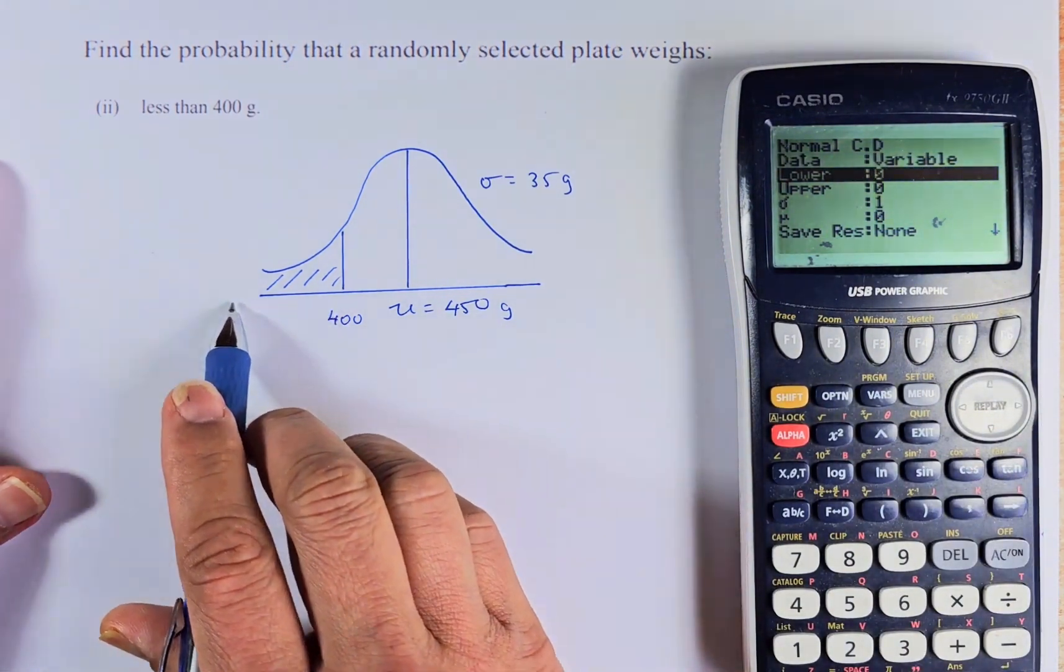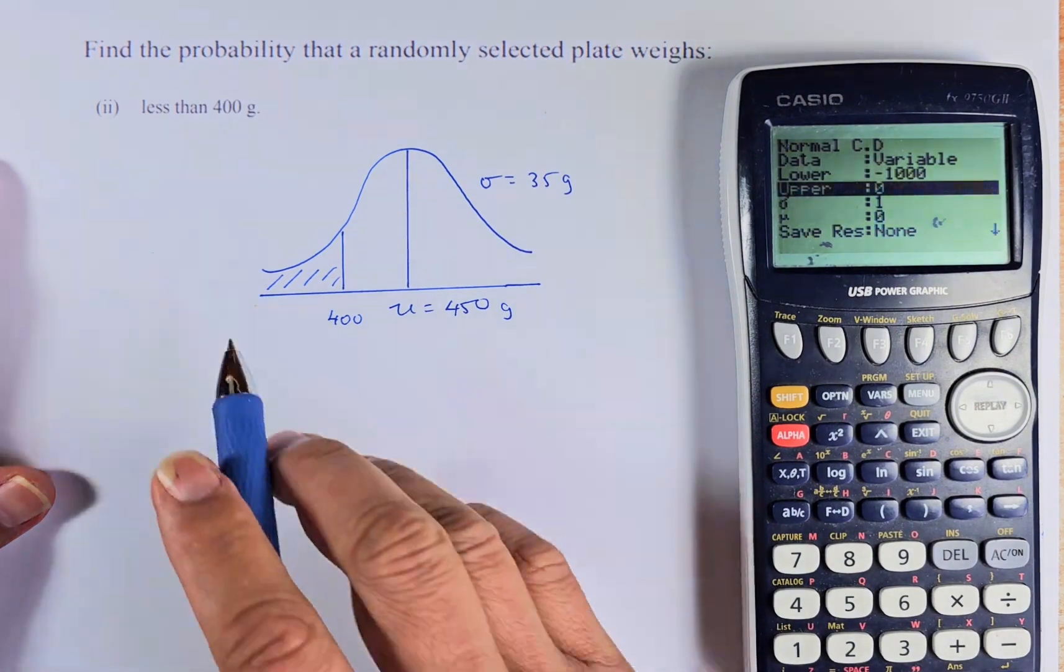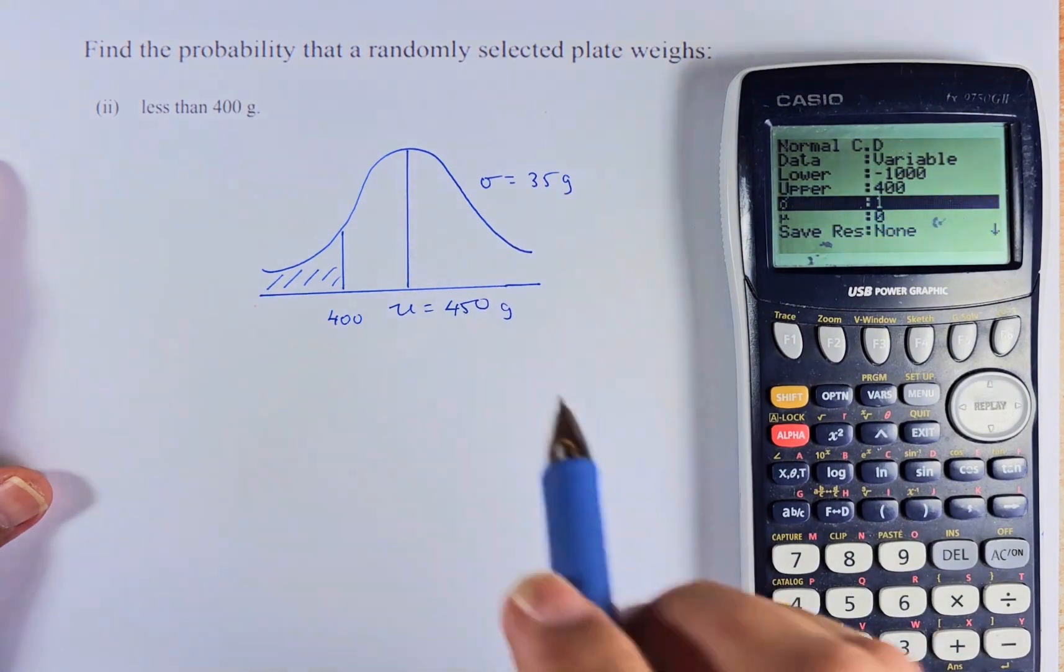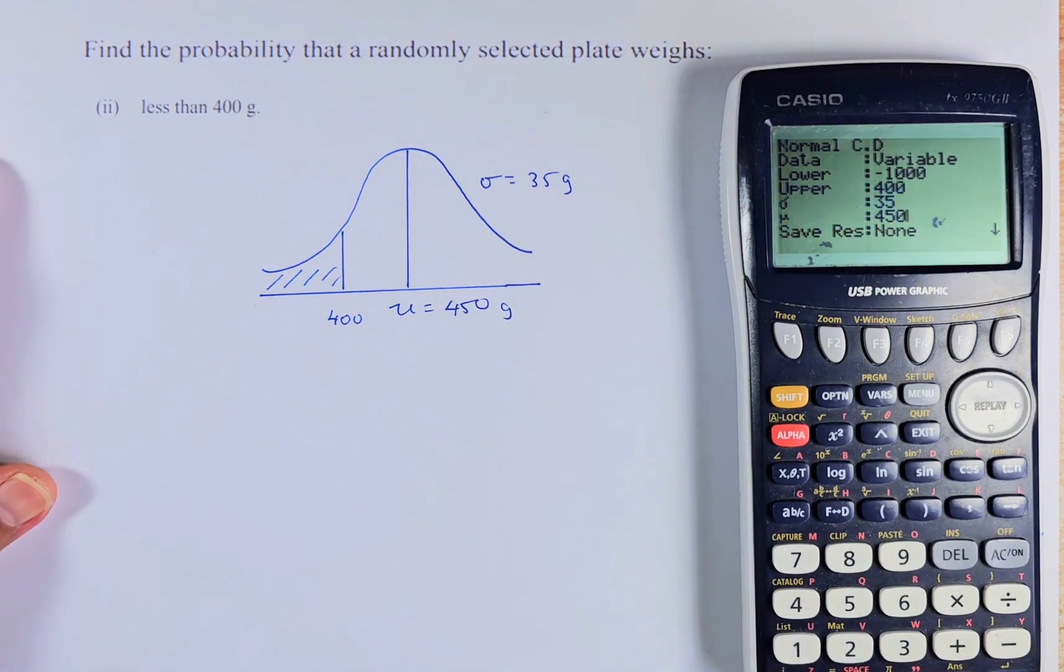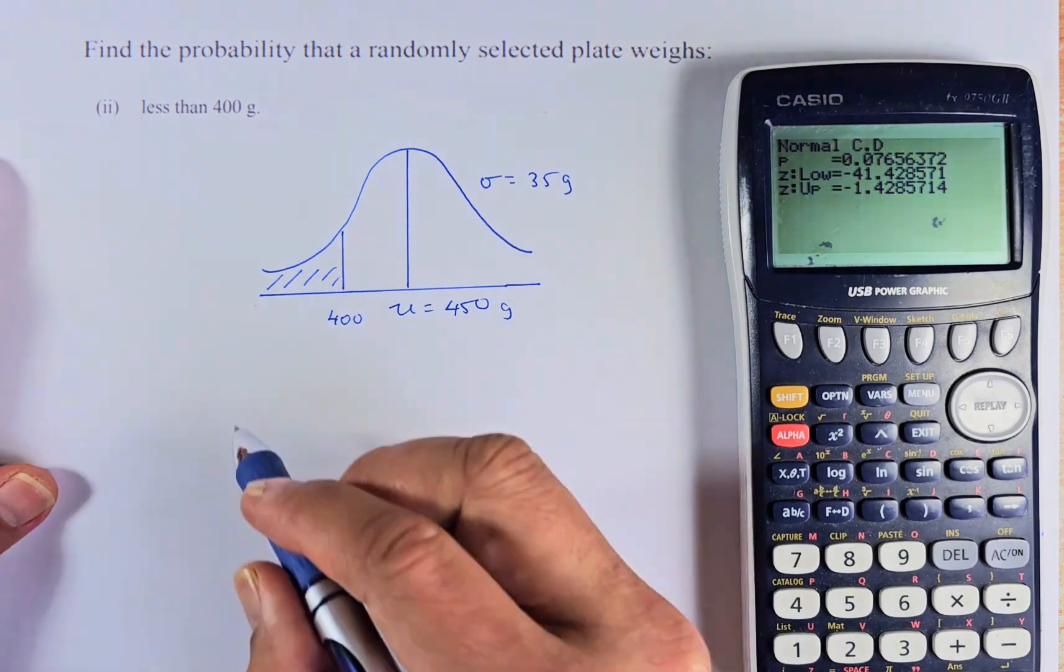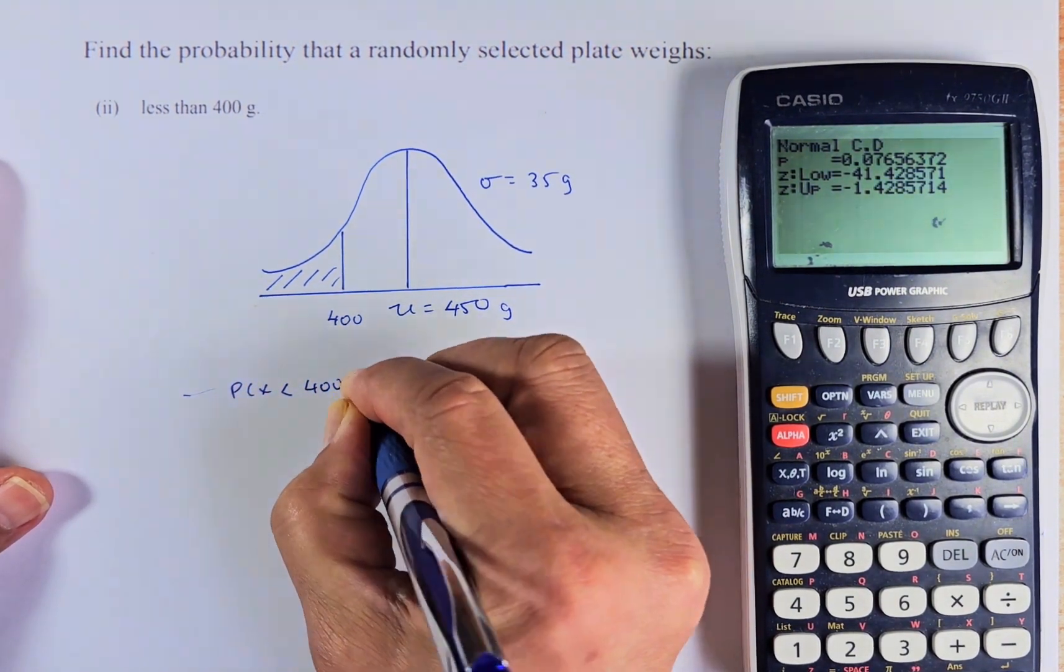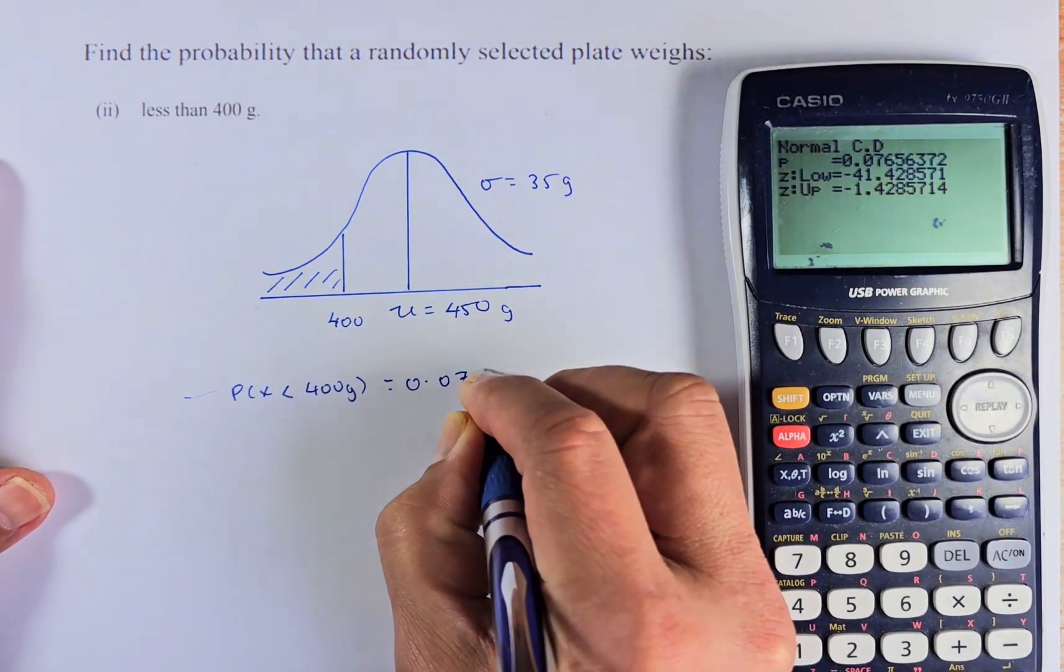Lower is where it starts. It's going to start somewhere here. So we just put a negative number, negative 1000 or 10,000, up to you. Execute. Upper is where it ends. It ends at 400. Execute. Sigma is 35, remains the same. And your mean is 450. And then we are going to just execute and execute one more time. And the answer, probability that X is less than 400 gram, the answer is going to be 0.0766.